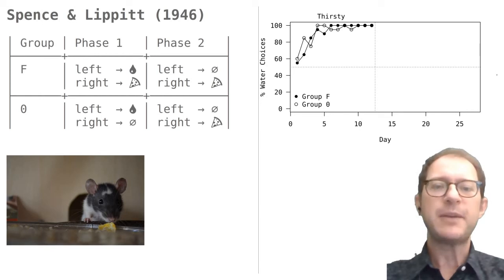The interesting part of the experiment is that at this point, Spence and Lippitt gave plenty of water to the rats but stopped feeding them for a while, so the rats from thirsty became hungry. This reduces the value of the water and increases the value of the food from the point of view of the rat.